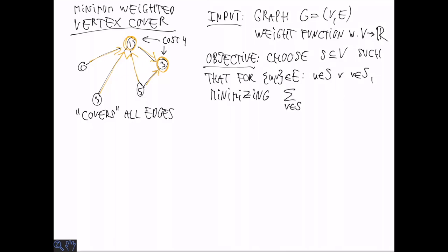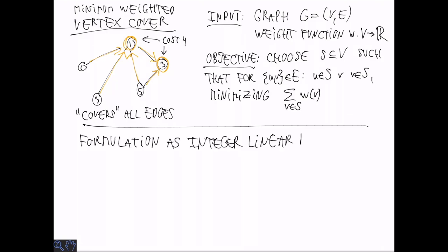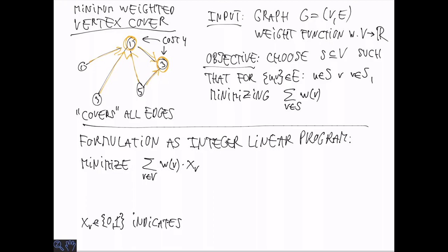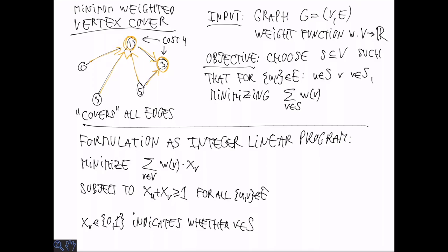It is not obvious how to design a greedy algorithm for this problem, but there is an obvious way of formulating it as an integer linear program. We define xv to be a 0-1 variable indicating whether v is in S. We minimize the sum of weights times xv, subject to the constraints that for each edge (u, v), xu + xv ≥ 1. Note that because we require xv to be 0 or 1, this is not a linear program—it's an ILP.